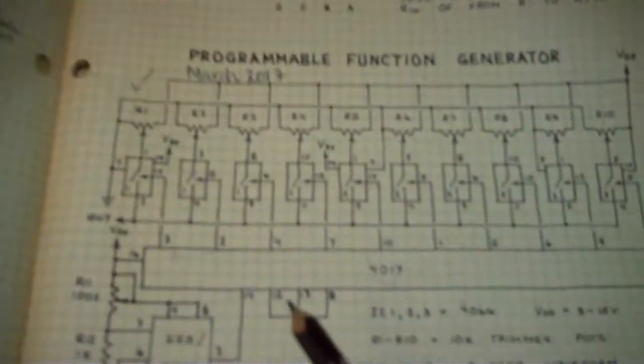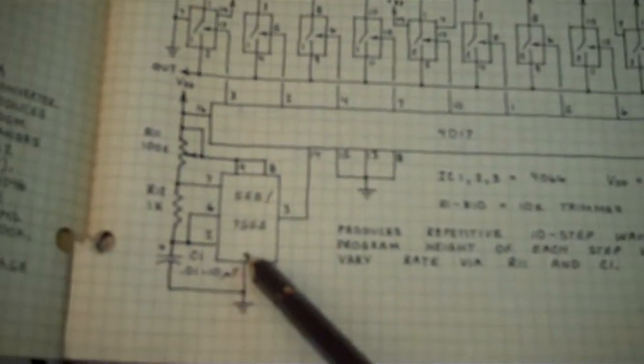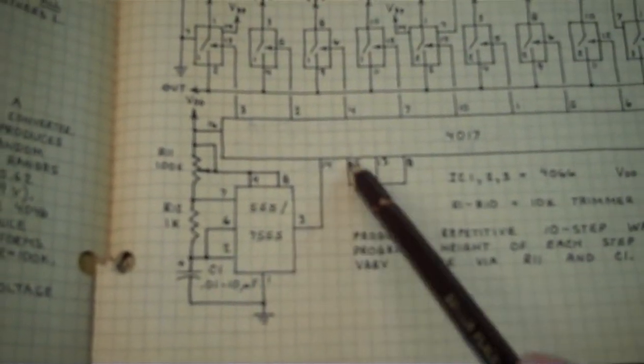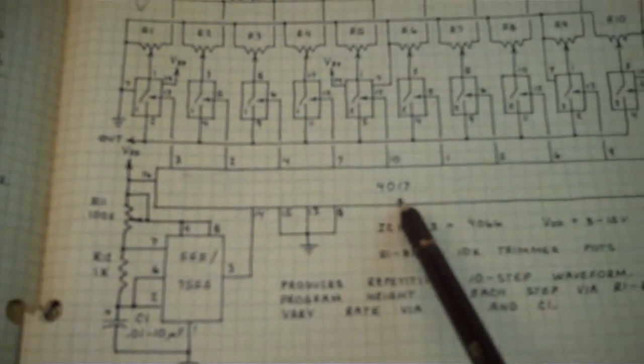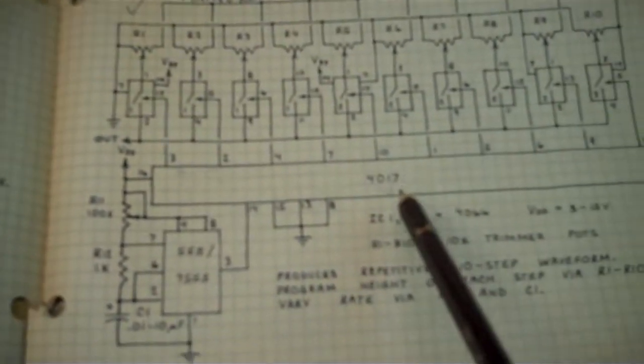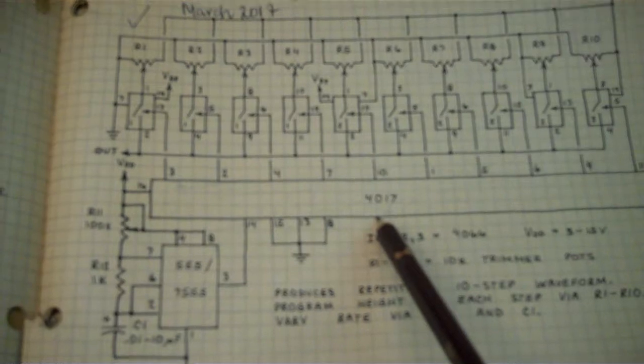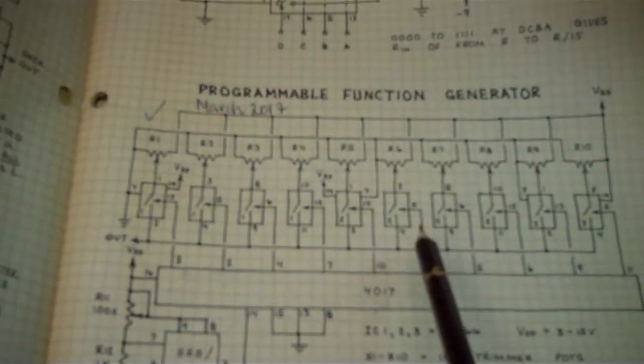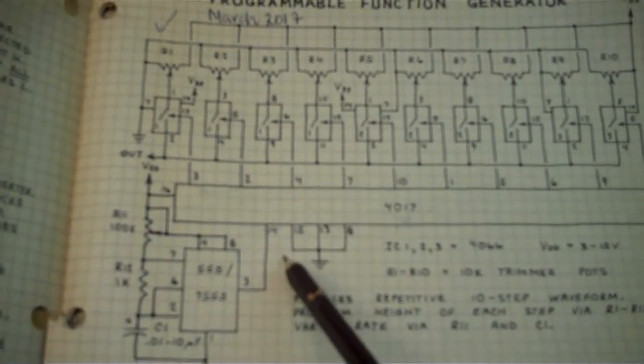Alright, so what the heck is happening here? Well, I'll tell you what's happening. First of all, we've got a clock. That's our typical 555 timer, and that's feeding our 4017 chip. This 4017 chip is a decade counter. It's a very useful chip. You'll find out that it has many purposes. But for ours, we're going to use it for this function generator.